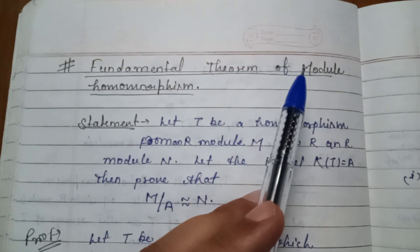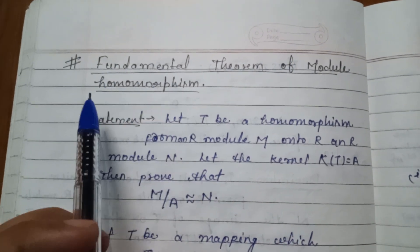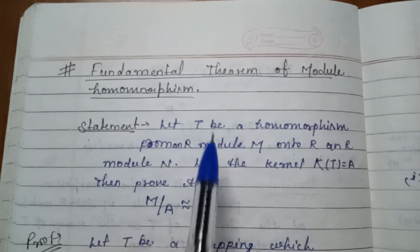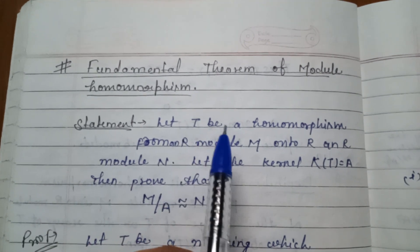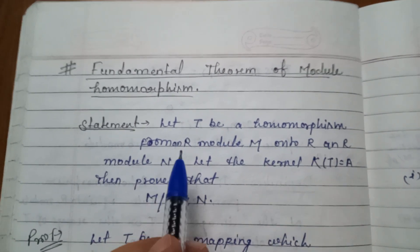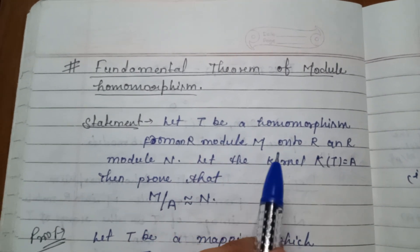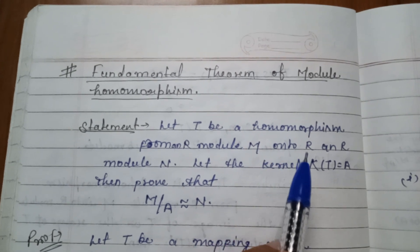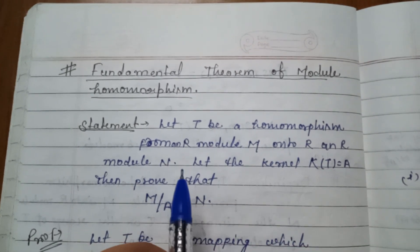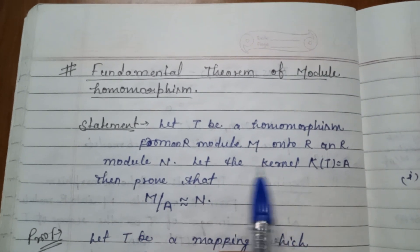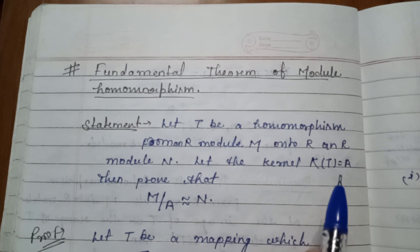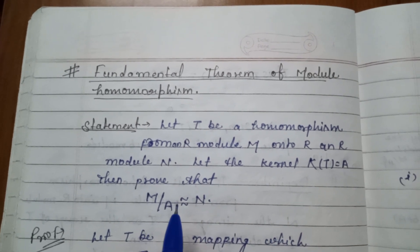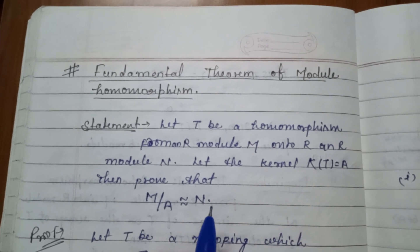Fundamental theorem of module homomorphism. The statement is: let T be a homomorphism from an R-module M onto R-module N. Let the kernel K(T) be equal to A, then prove that M/A is isomorphic to N.